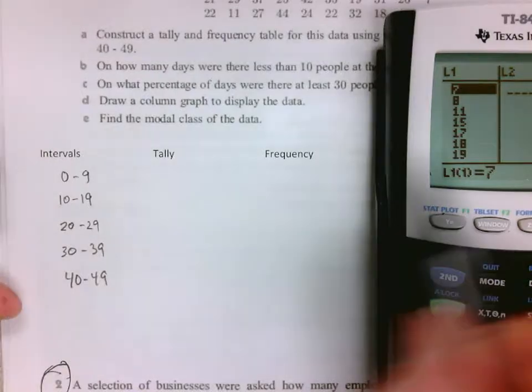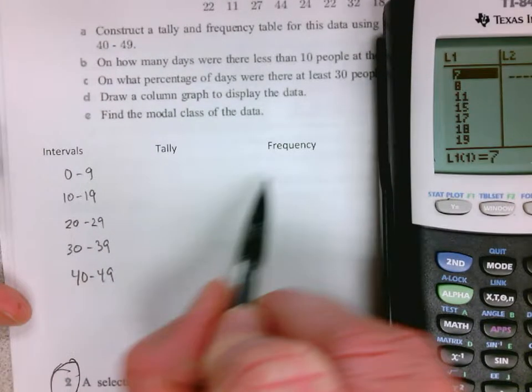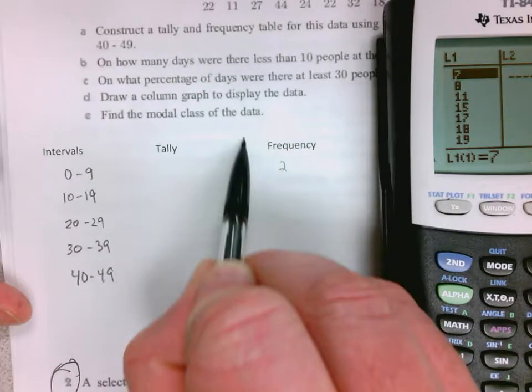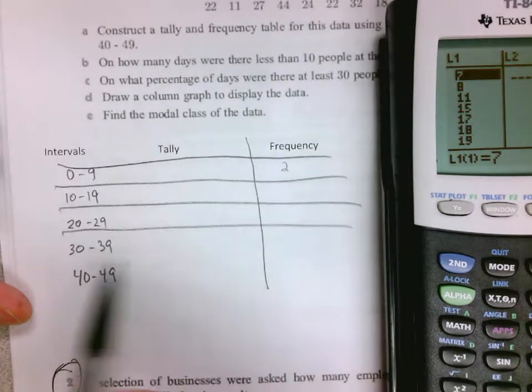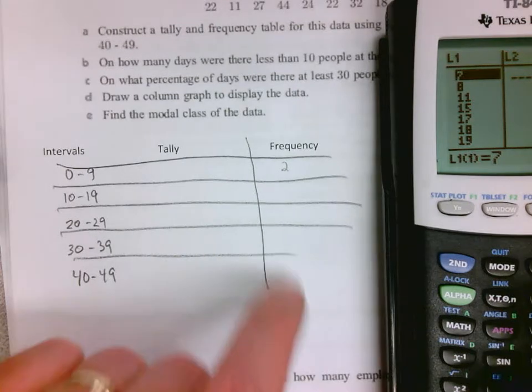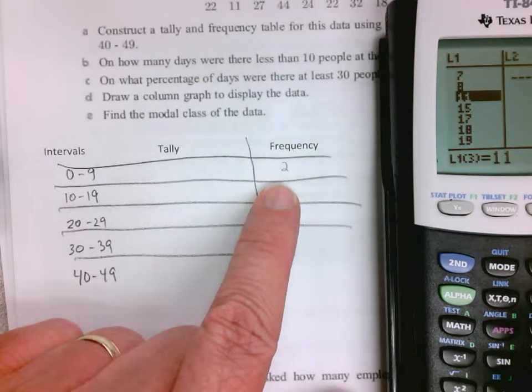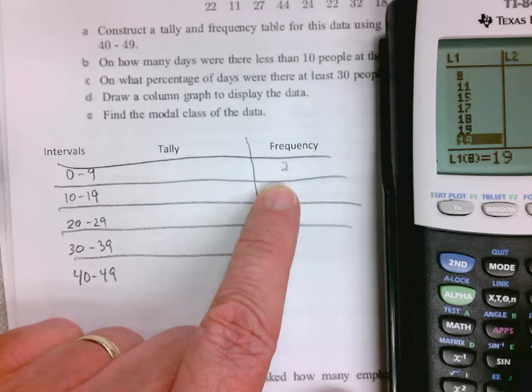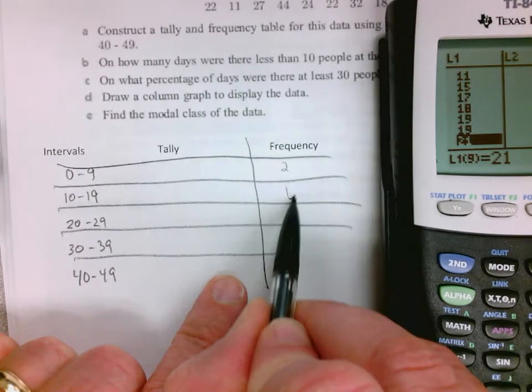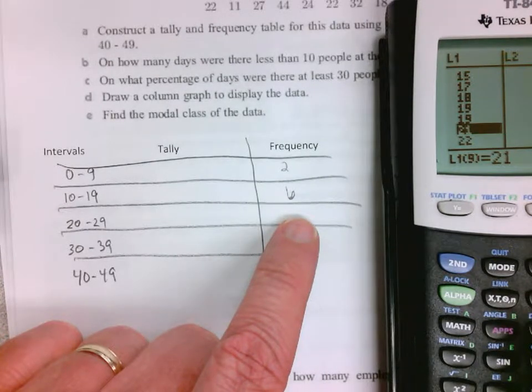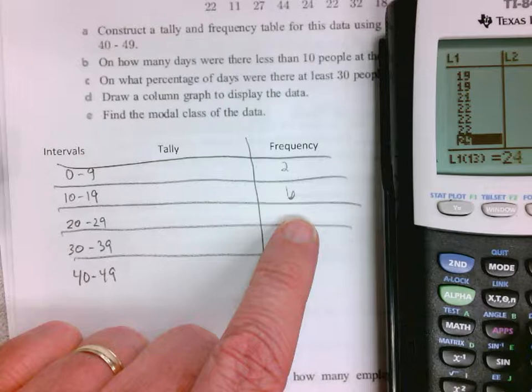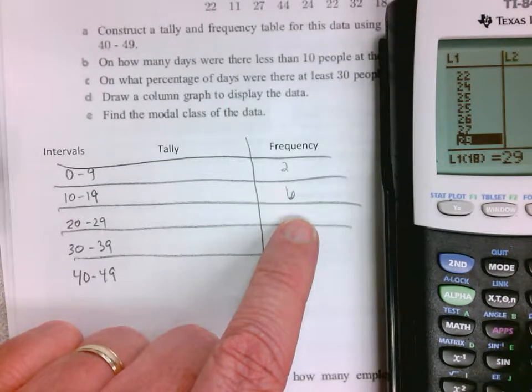So that would be two. You want to divide that off to help you out. So less than nine is two. Then from 10 to 19, I have 1, 2, 3, 4, 5, 6, 7, 8, 9, 10, 11, 12. So I have 11.